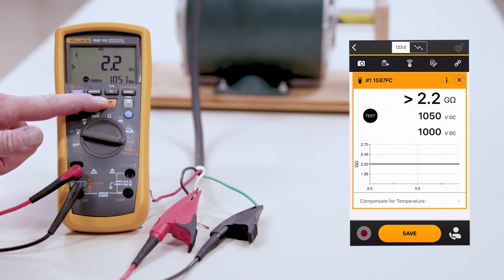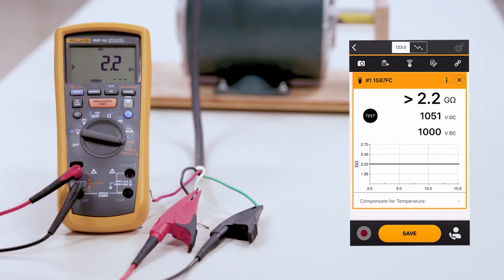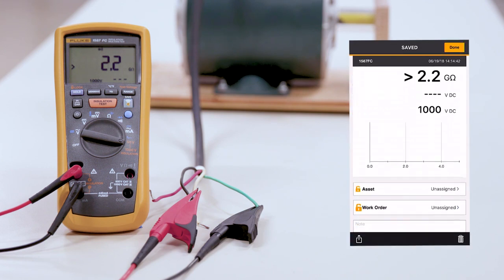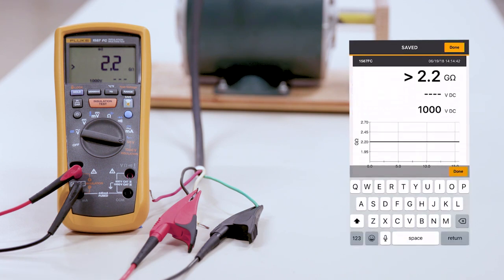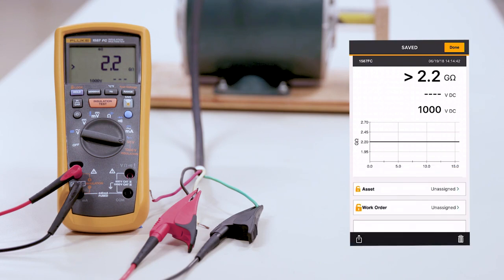We'll run this for 10 seconds. We're basically charging up the line to confirm nothing is breaking down. Now that we've run that test, let's go ahead and save it. We'll make our note. This time it was the black leg. We'll hit our done button and we'll hit our done button up at the top.